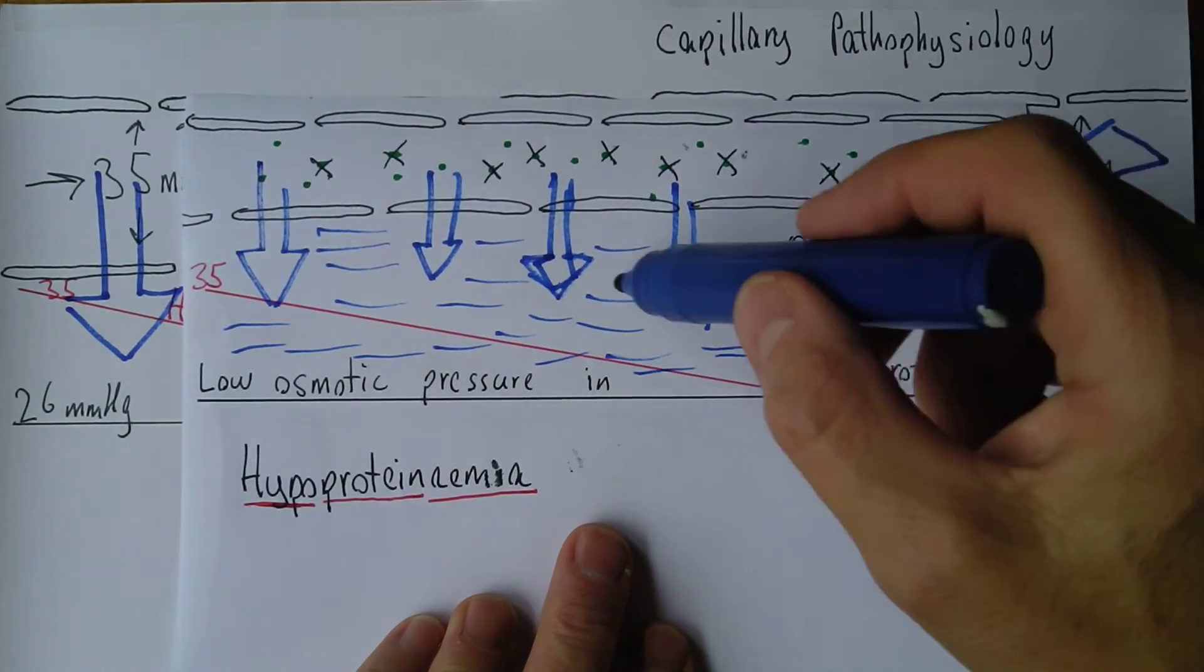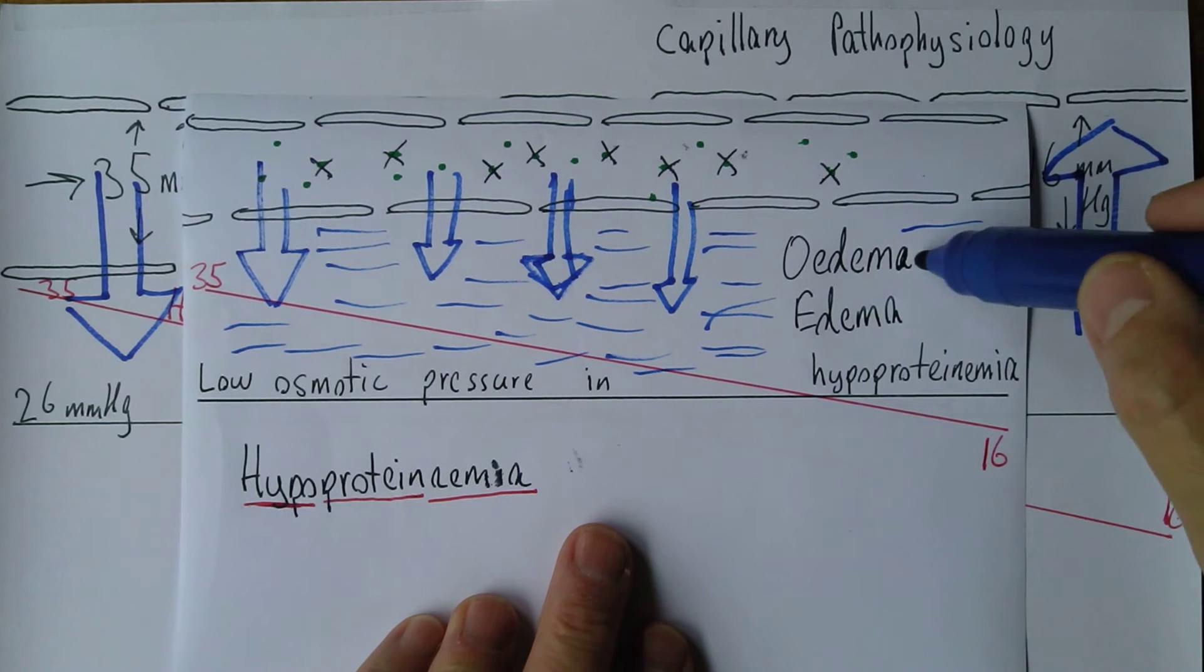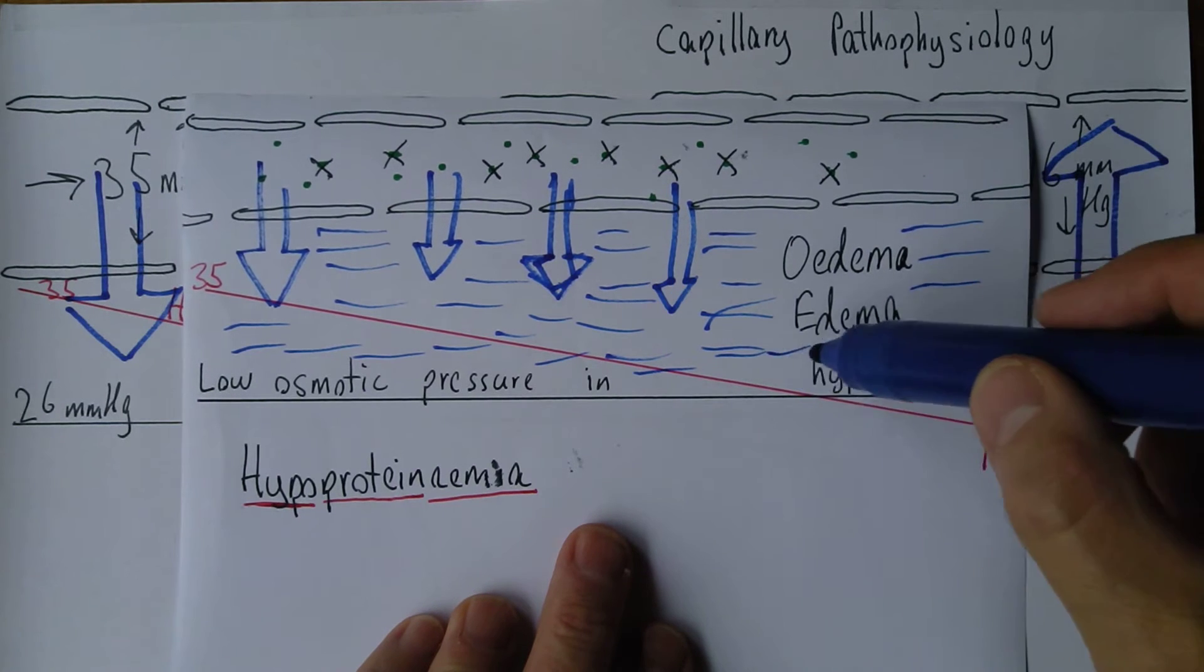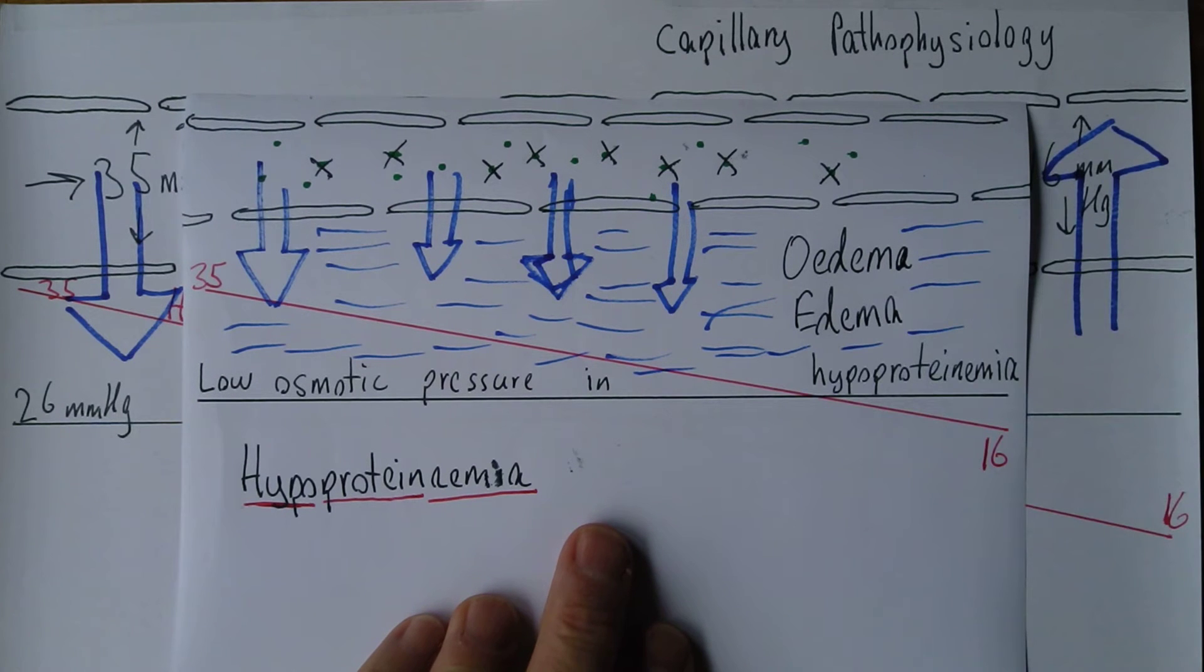So you've seen these appalling pictures of children with blown up tummies who are malnourished in famine situations. Because there's a huge vasculature, there's huge capillary beds in the mesentery, and the fluid will drain into the, or the fluid will accumulate in the peritoneal cavity.